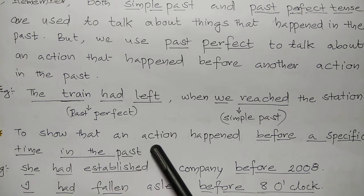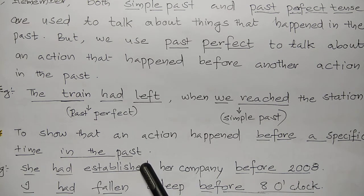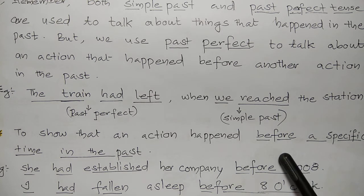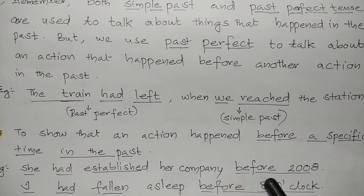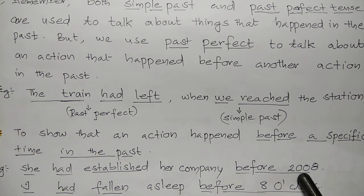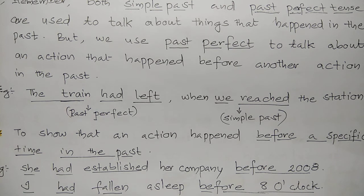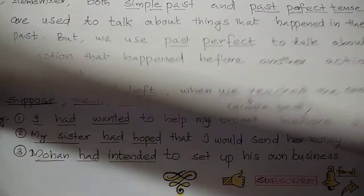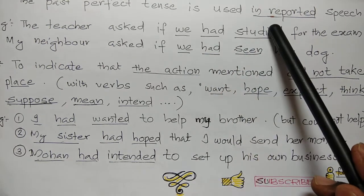We also use the past perfect tense to show that an action happened before a specific time in the past. Example: 'She had established her company before 2008' — 2008 is a specific time in the past, so before 2008 she had established her company. Another example: 'I had fallen asleep before eight o'clock' — eight o'clock is another specific time in the past.